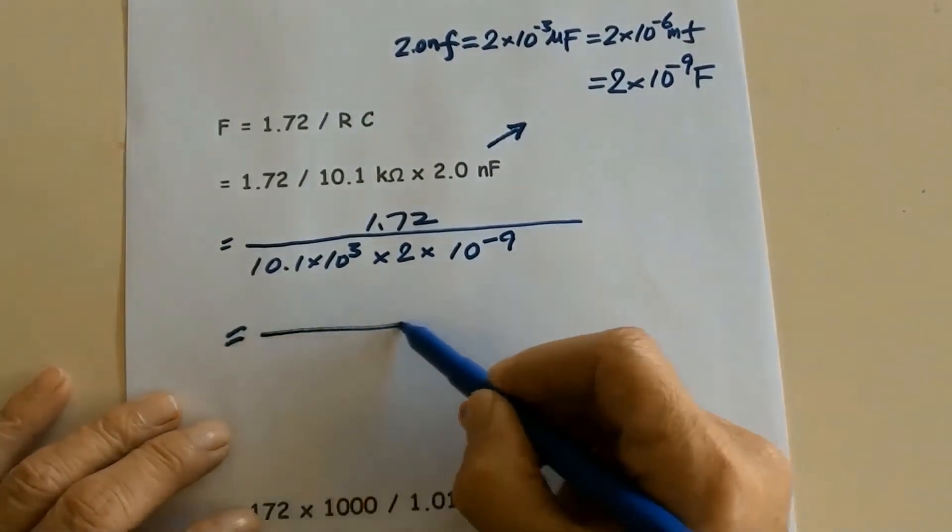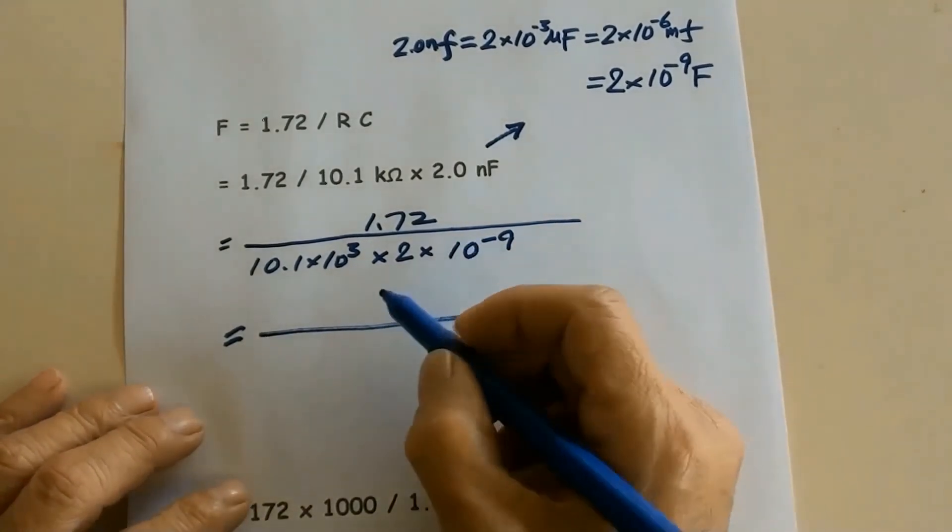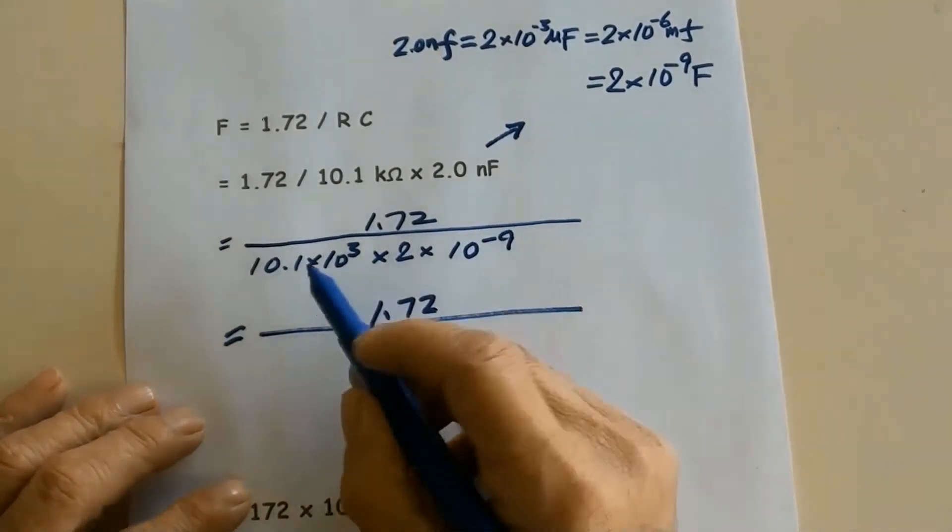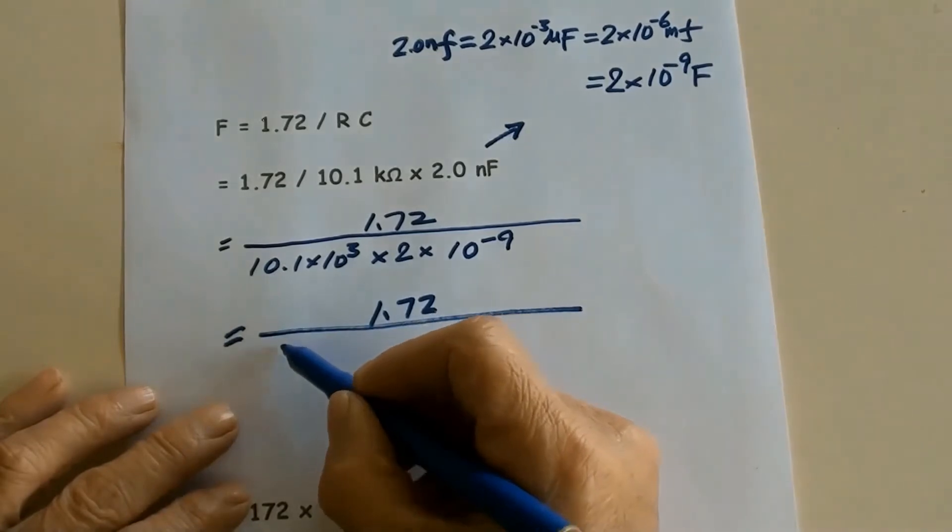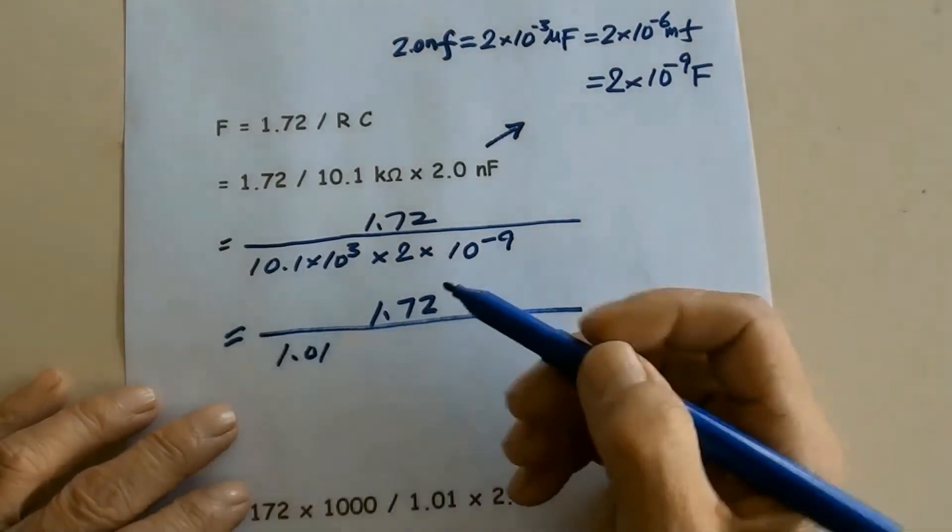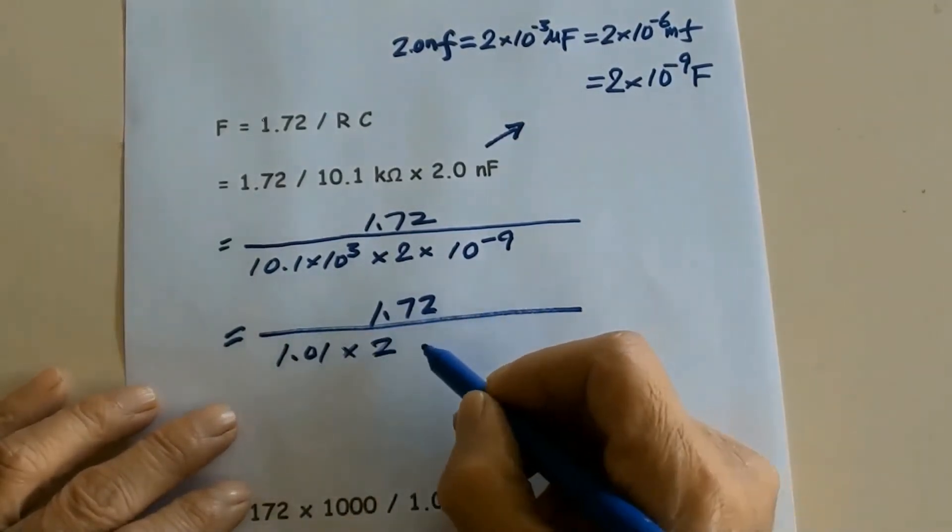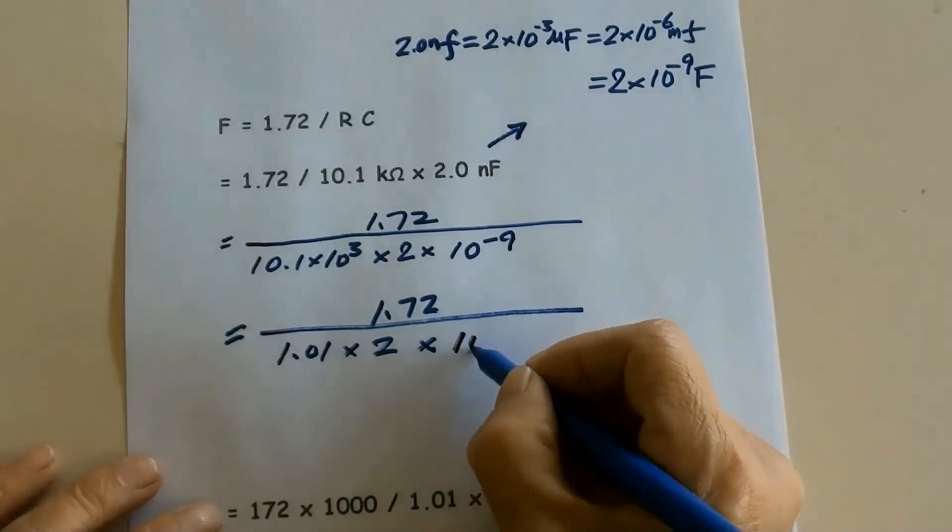Equals 1.72 over 1.01 times 2 times 10 to the power of negative 5.